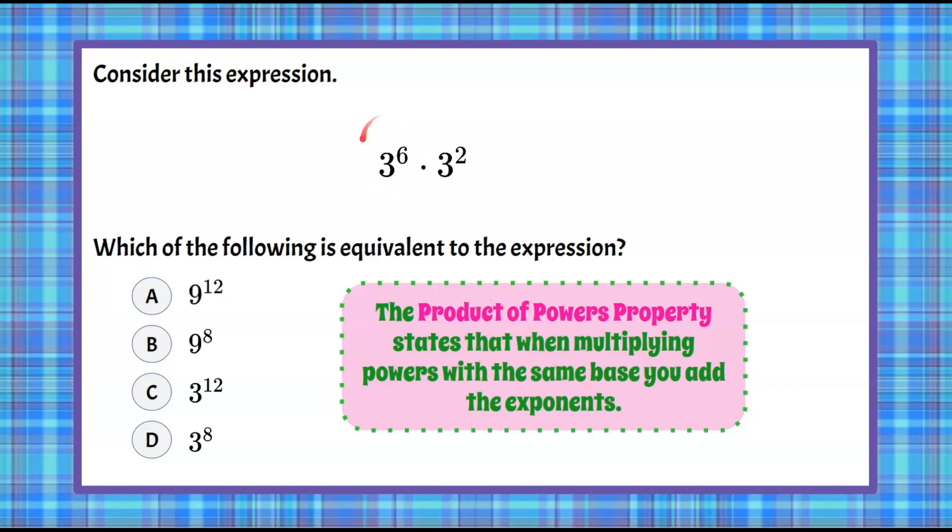So we have two powers here. 3 to the 6th is a power. 3 squared is a power. Our bases are 3, and because they're the same, we know that we can use the product of powers property, and we can take our exponents, 6 and 2, and we're going to add them together.